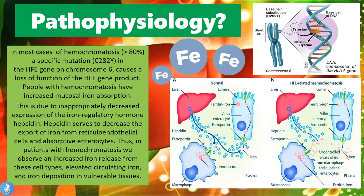Hepcidin serves to decrease the export of iron from reticular endothelial cells and absorptive enterocytes. In patients with hemochromatosis, we observe increased iron release from these cell types, elevated circulating iron, and iron deposition in vulnerable tissues. In a normal case, hepcidin is released by the liver and regulates channels called ferroportin, which control the absorption of iron from the absorptive enterocytes — the cells that absorb iron from the intestine.